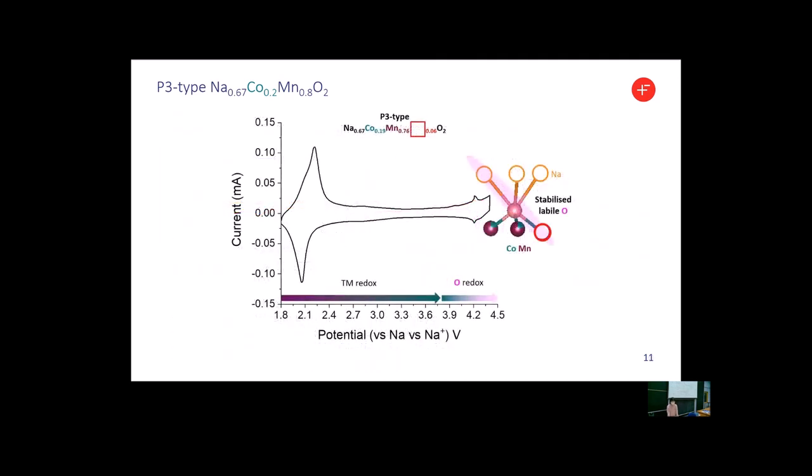Based on various characterization techniques, we can conclude that 6% transition metal vacancies were formed, just simply by changing sintering conditions. That triggers oxygen redox, stabilizing lattice oxygen.